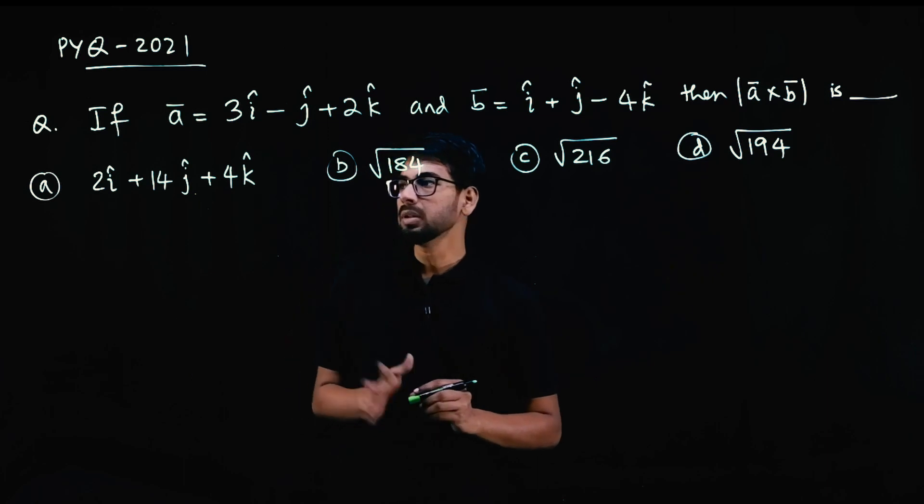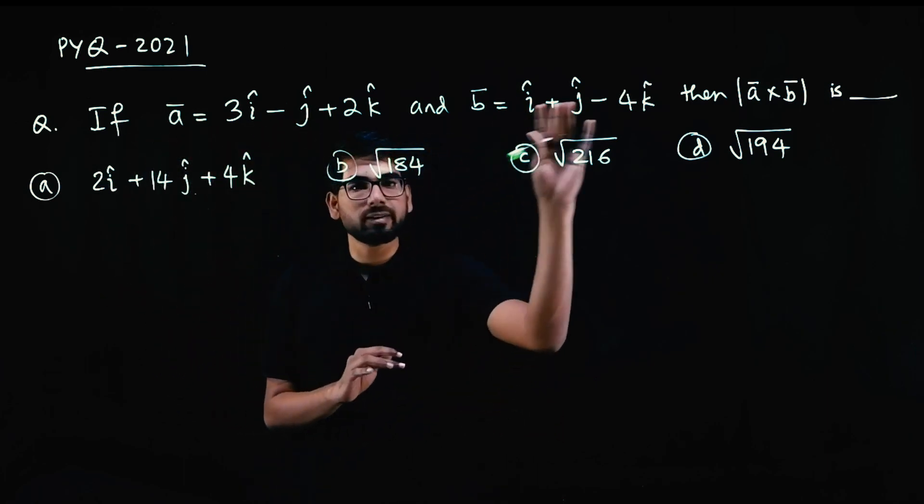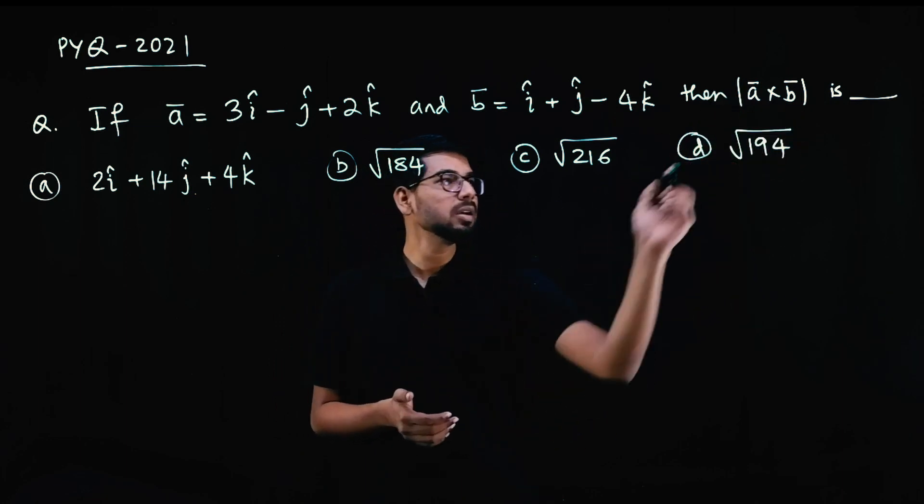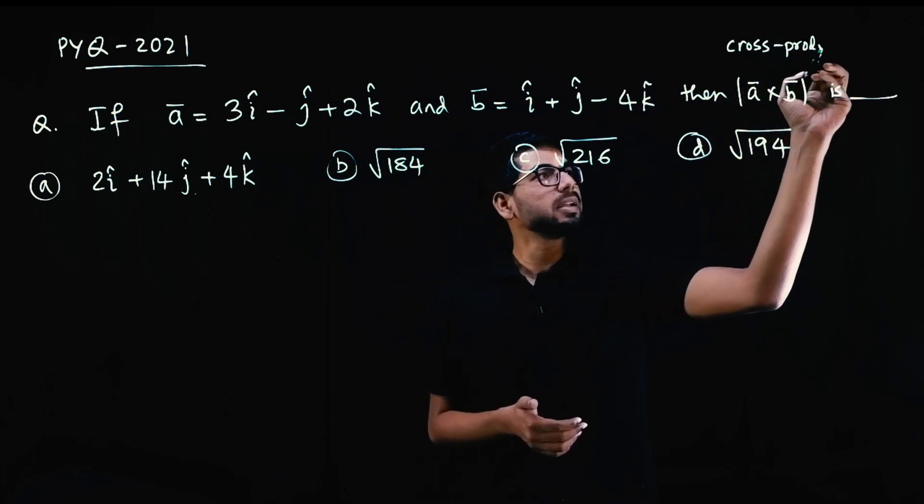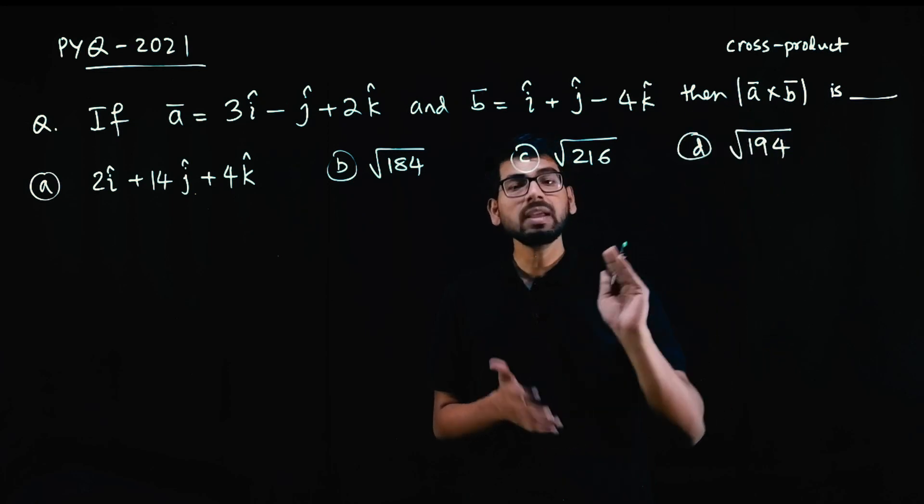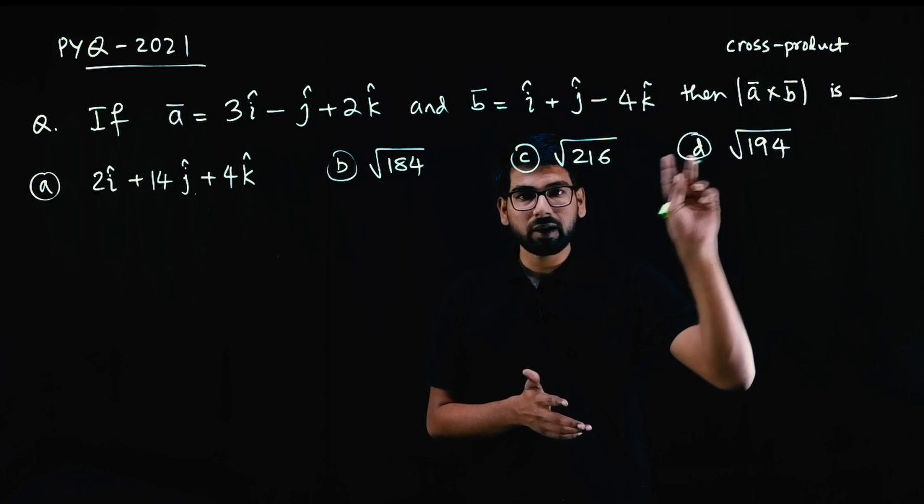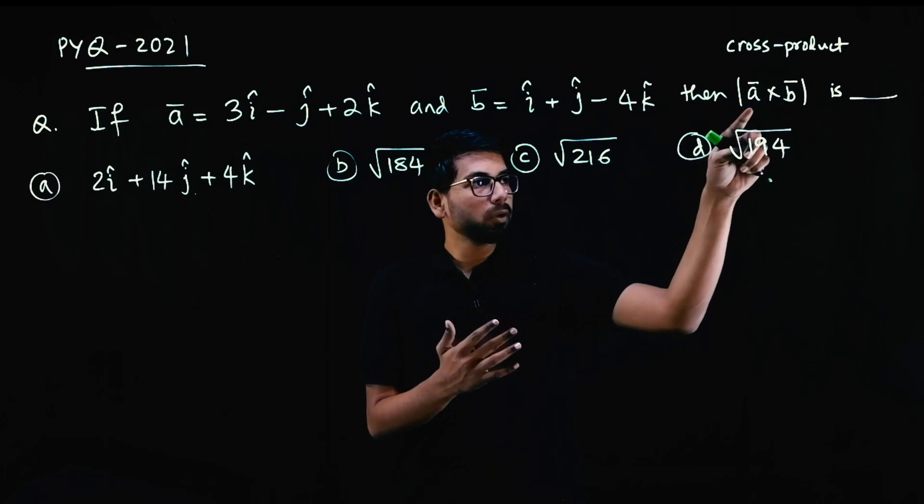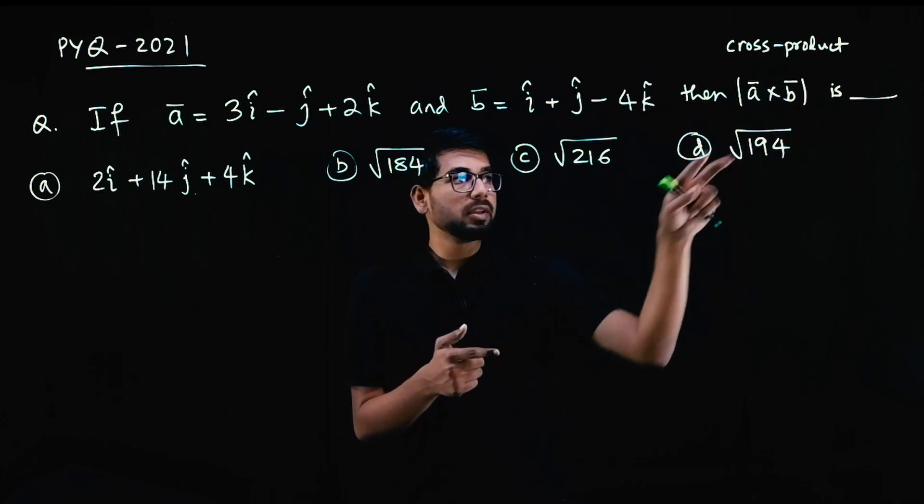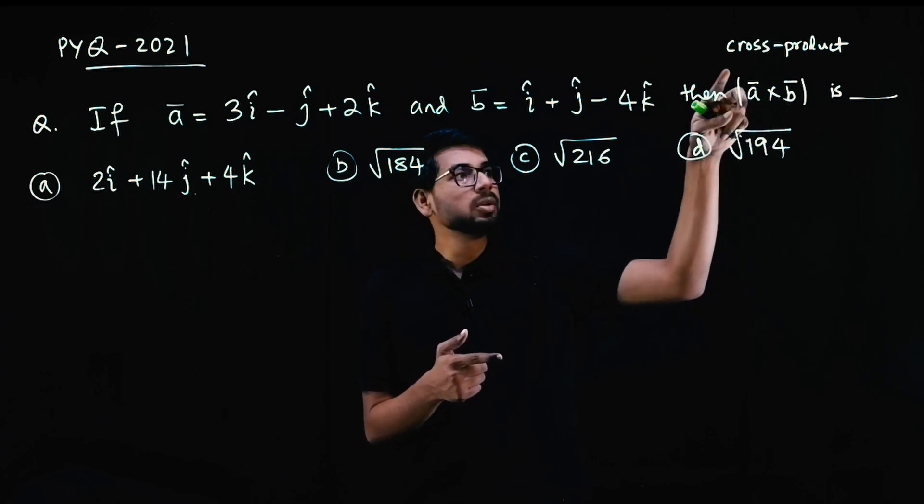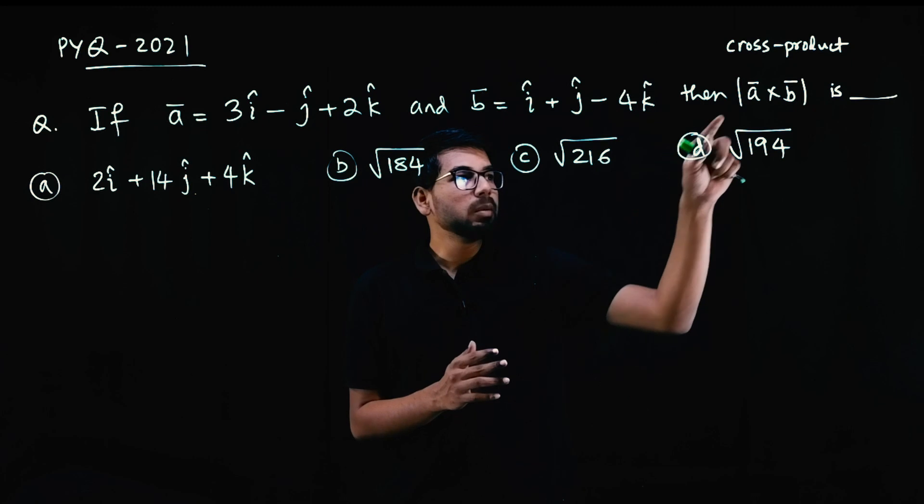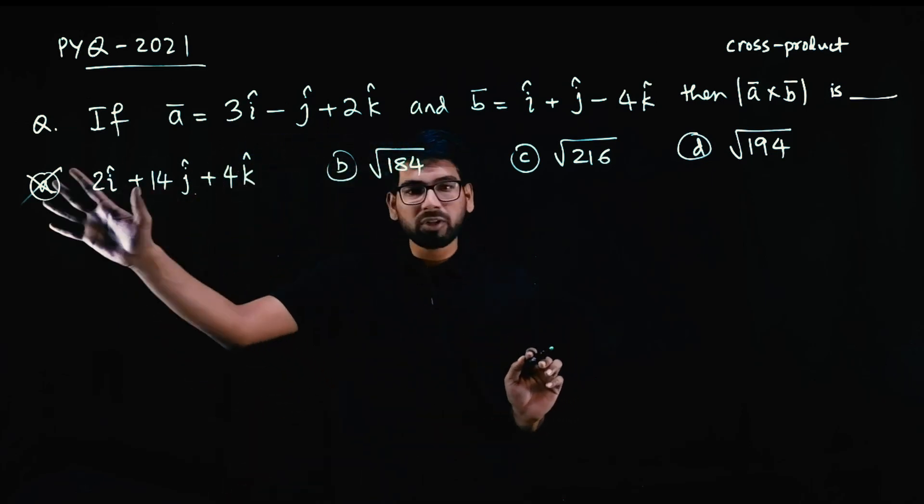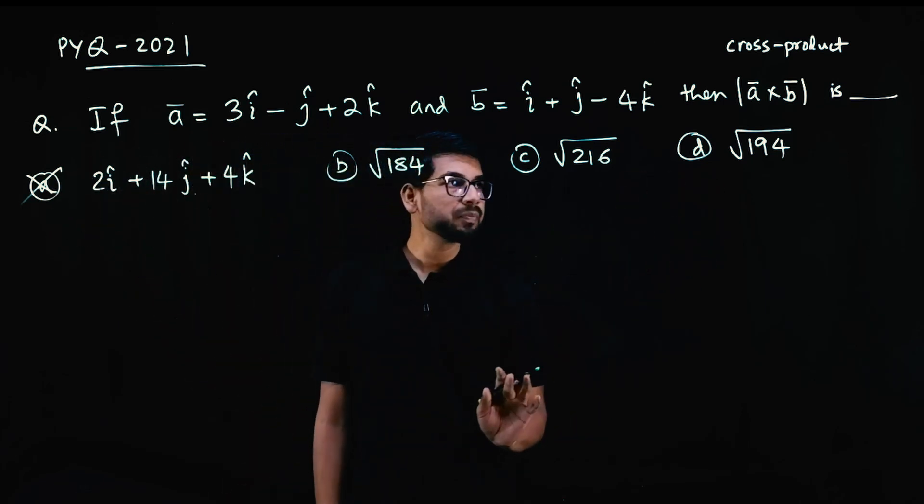So 2021 question vectors. If A vector is this and B vector is this, then magnitude of A bar cross B bar. What do we need to do? This is cross product or vector product. Magnitude of the resulting vector quantity. When you cross product two vectors, you will get another vector. The answer could have a vector, and that vector's magnitude. Magnitude of a vector is always a number, it is not a vector. So right away we can remove this option. This is not the answer.